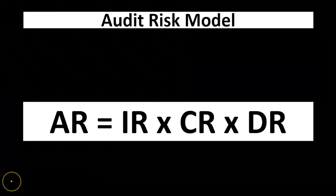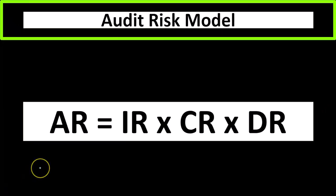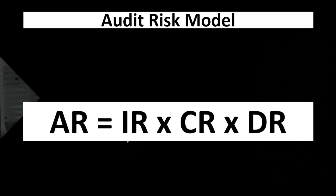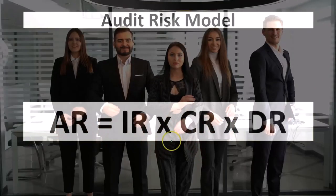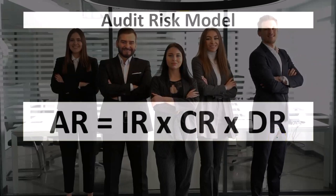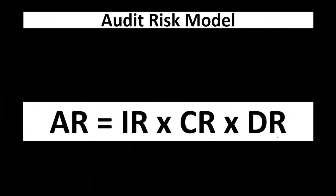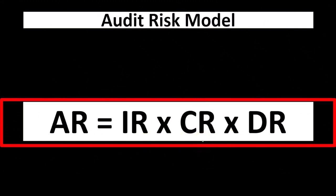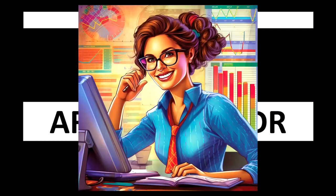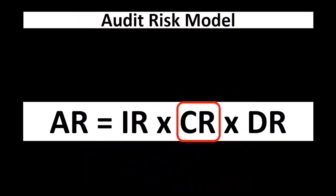The audit risk model represents in a formula format: audit risk equals inherent risk times control risk times detection risk. Inherent risk is what's inherent in the organization or type of business. Control risk is what we've been discussing — what the business designs into its internal control system. Detection risk is whether the audit process will pick up any problems. Inherent risk and control risk are on the business side; control risk is the component we are focusing on here.